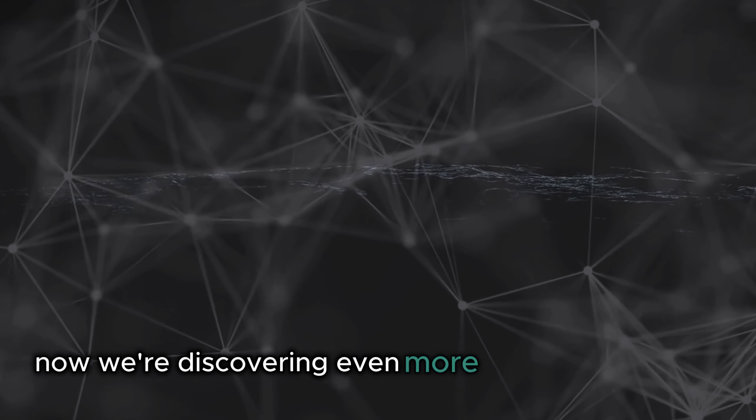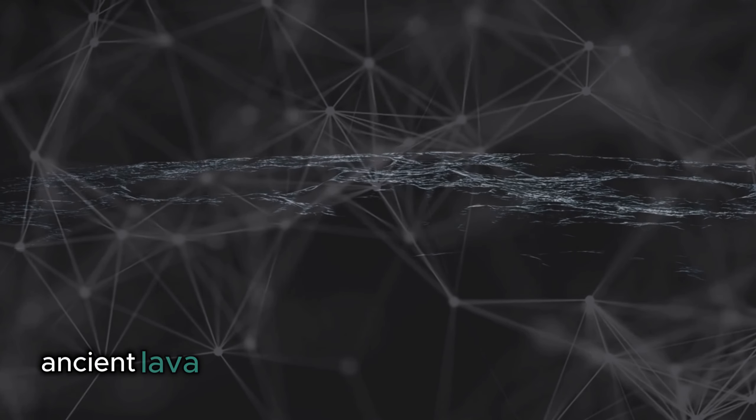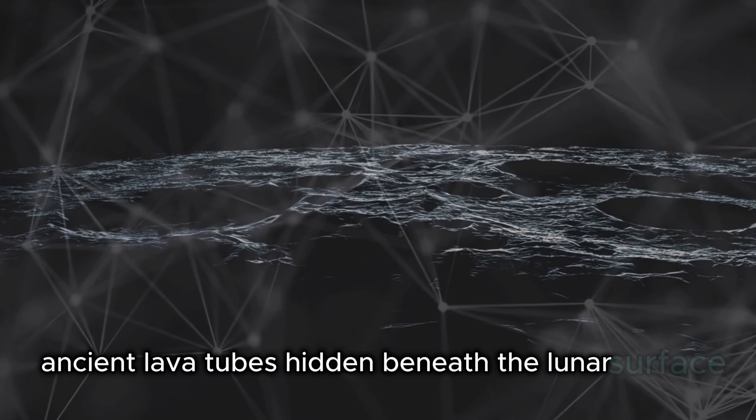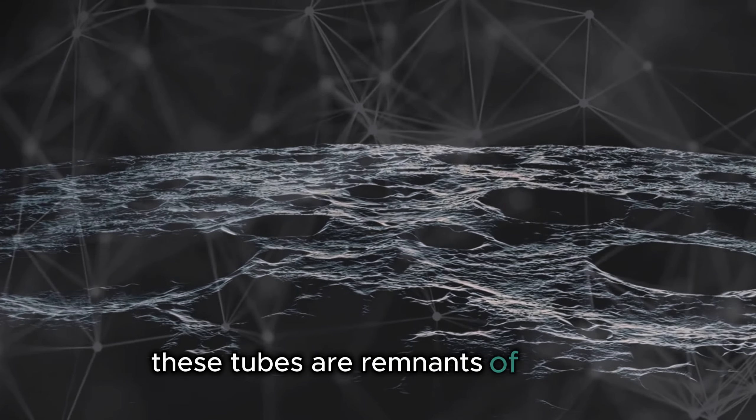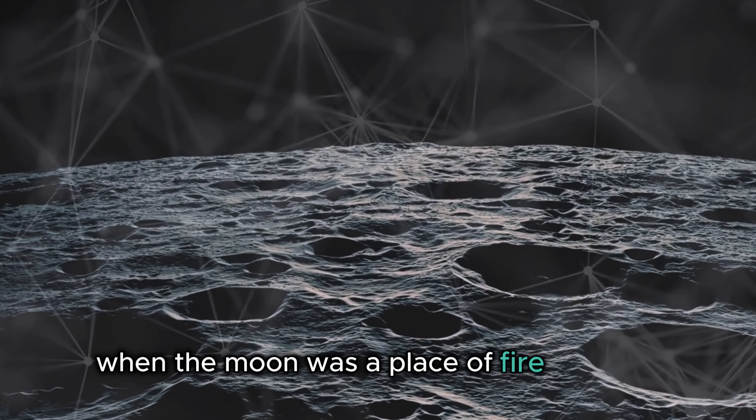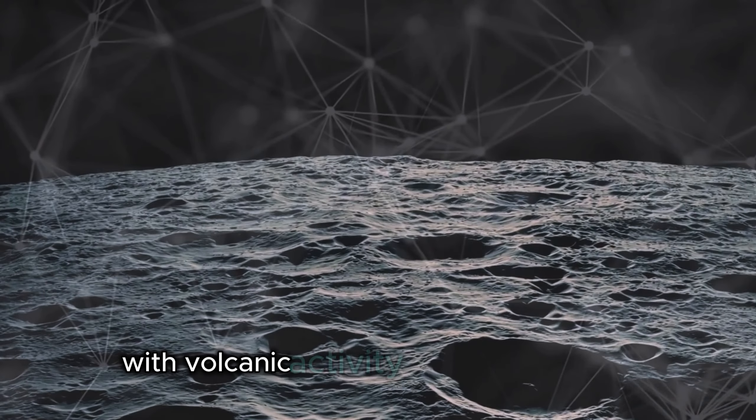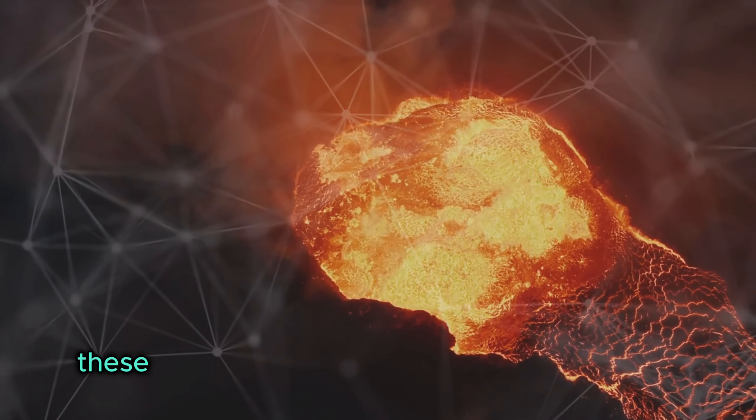Now we're discovering even more intriguing features: ancient lava tubes hidden beneath the lunar surface. These tubes are remnants of a time when the Moon was a place of fire and fury, with volcanic activity shaping its terrain.